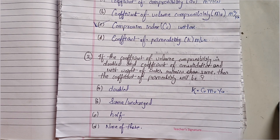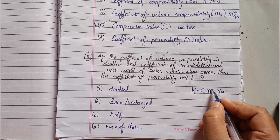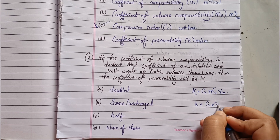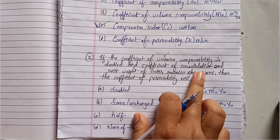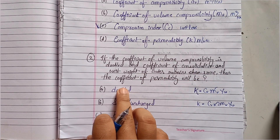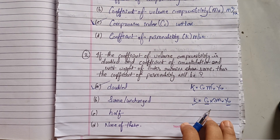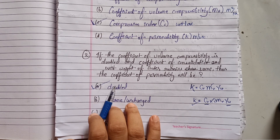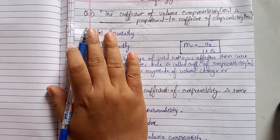From this equation, if the coefficient of volume compressibility is doubled and the coefficient of consolidation and unit weight of water remain the same, then the coefficient of permeability will also double. So option A is the correct option — double.